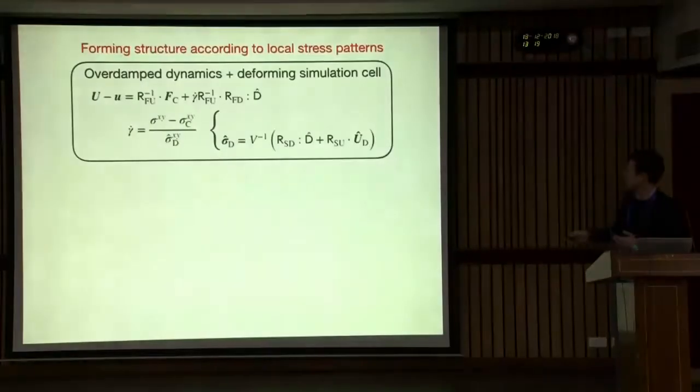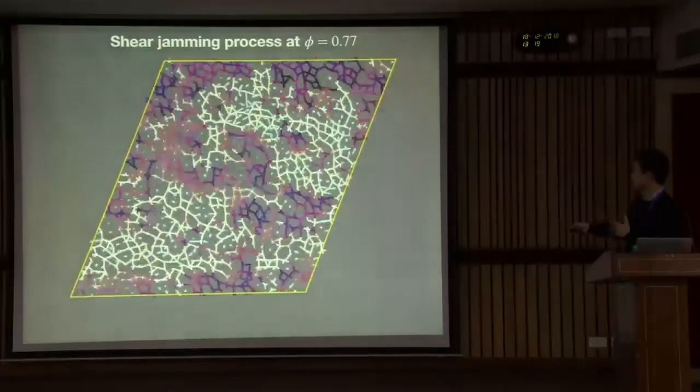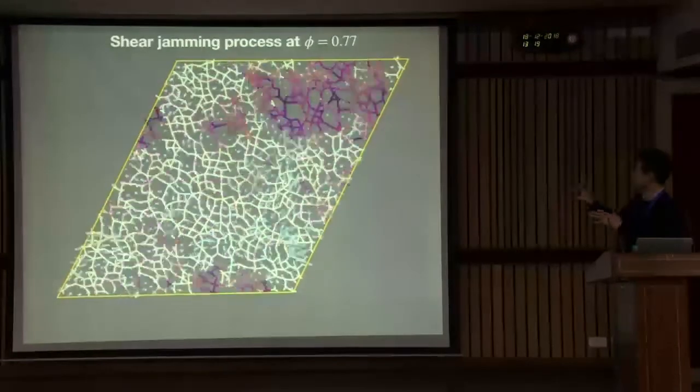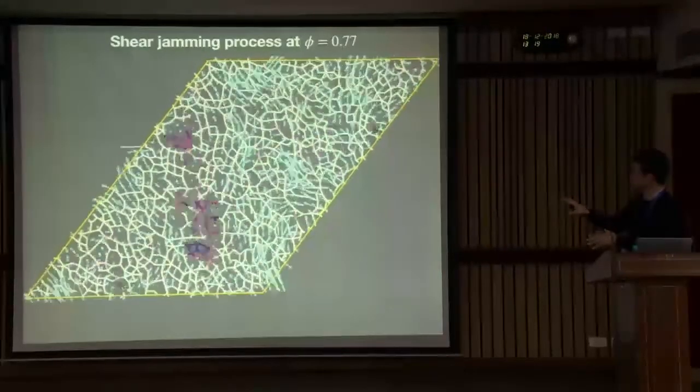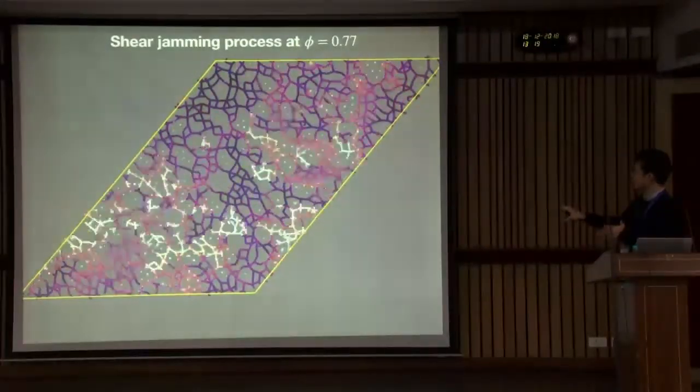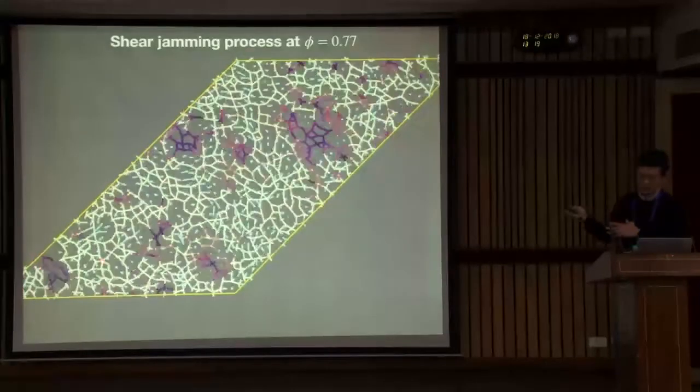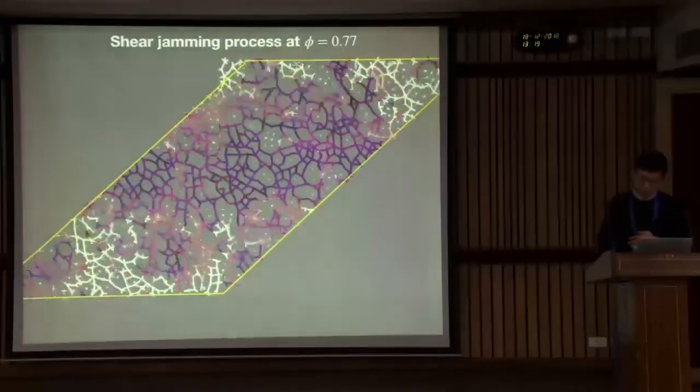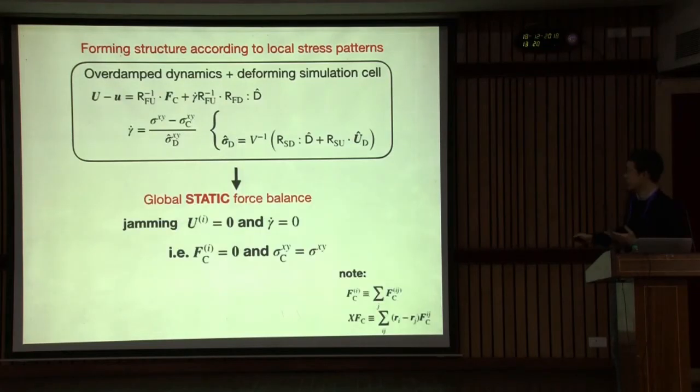This physics is maybe not new, but thanks to our overdamped dynamics simultaneously determining this displacement based on contact force and deformation, somehow this kind of collective motion can be captured in this algorithm. But of course, the disadvantage is this method is quite expensive. I have to select the time step very short to achieve this global force balance. System size is not so large. But still, some mathematical framework is clear. Maybe we get more insight about this shear jammed state.